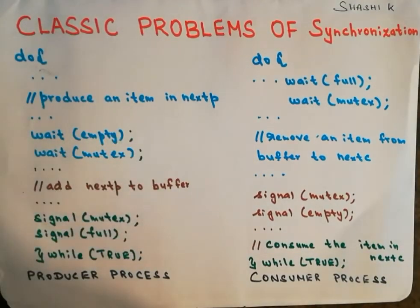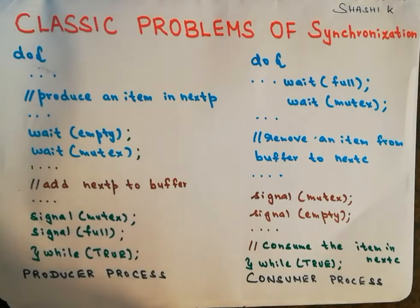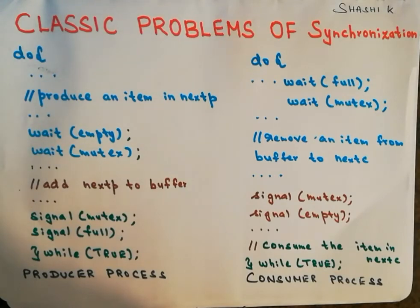Now consider the code for the consumer process. For the consumer to consume an item, there should be at least one buffer which is full. So the consumer first executes the wait operation on the full semaphore. If the value of full is 0 or less, it means there are no full buffers and all buffers are empty, so it keeps looping until full becomes greater than 0, meaning at least one buffer is full.